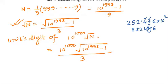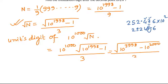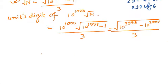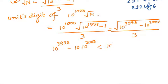Taking 10^1000 within the square root, this will become √(10^3998 - 10^2000) divided by 3. This number is definitely going to be less than √(10^3998 - 8×10^2000 + 16).